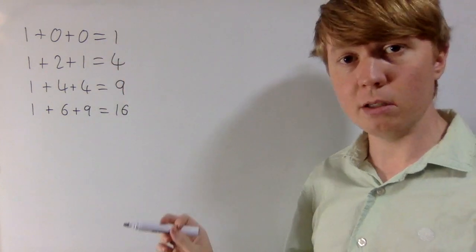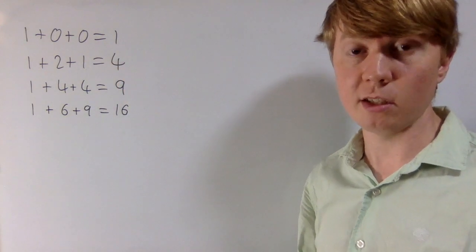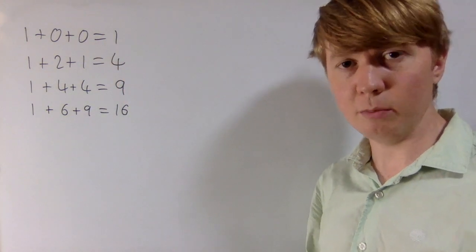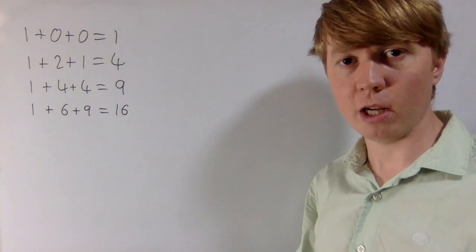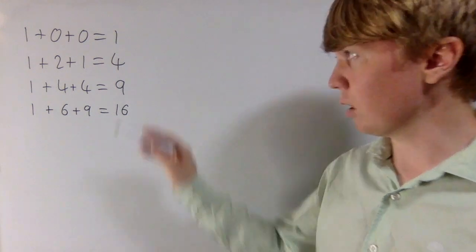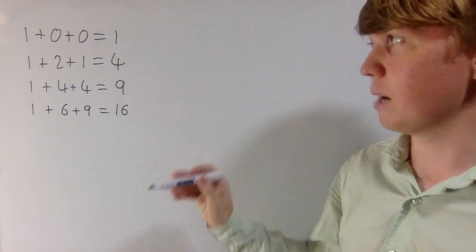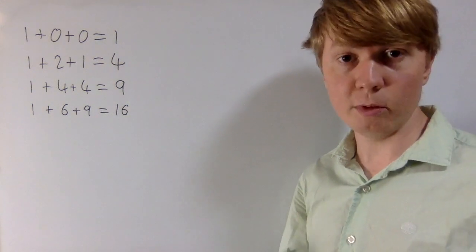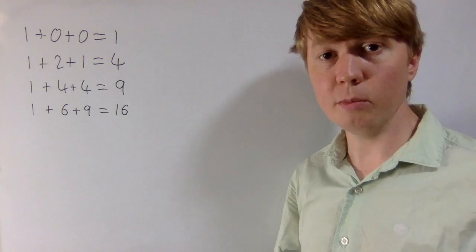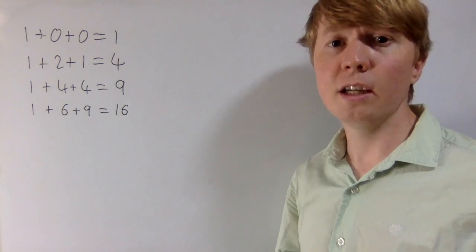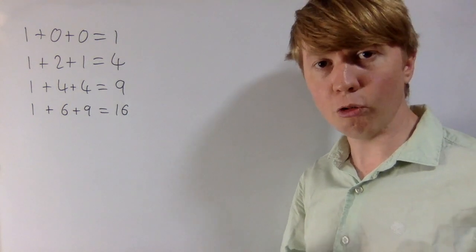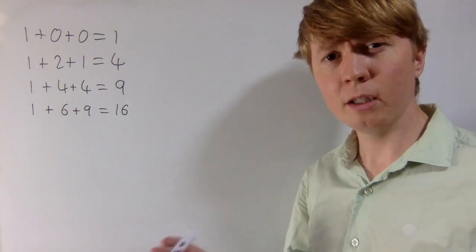And if you go back to 9 squared, the sum of digits is 9, which is again a square number, which is really interesting. What's especially interesting about these four examples is not only is the sum of digits equal to a square number, but the sum of digits is actually equal to the sum of digits of your original number squared.